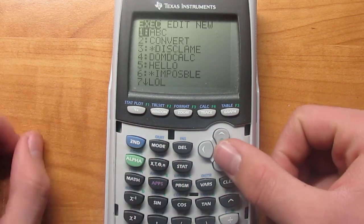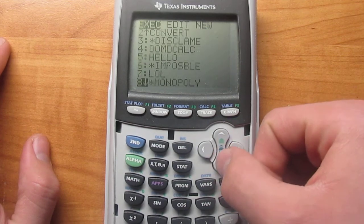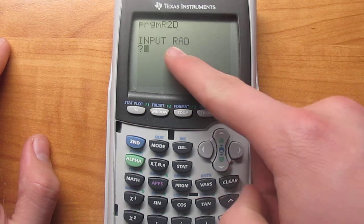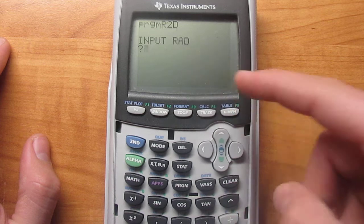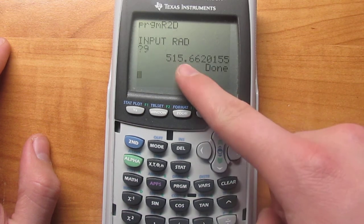And so I can quit. Program. Find it. It should be R2D. Go ahead and run that. And it'll say input your radian. And let's say we had 9. That's your answer right there.